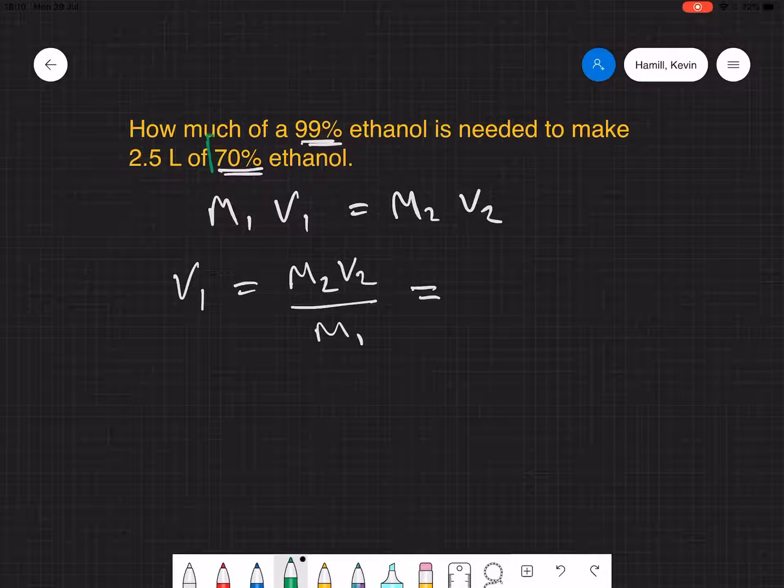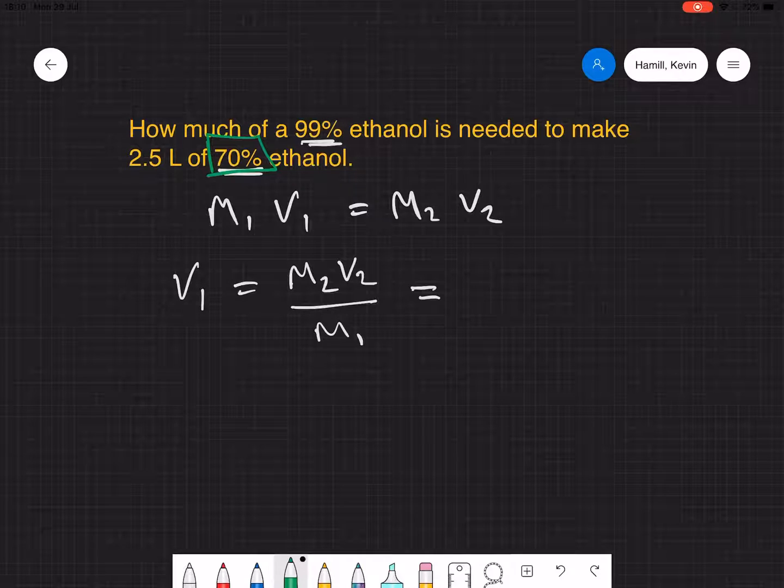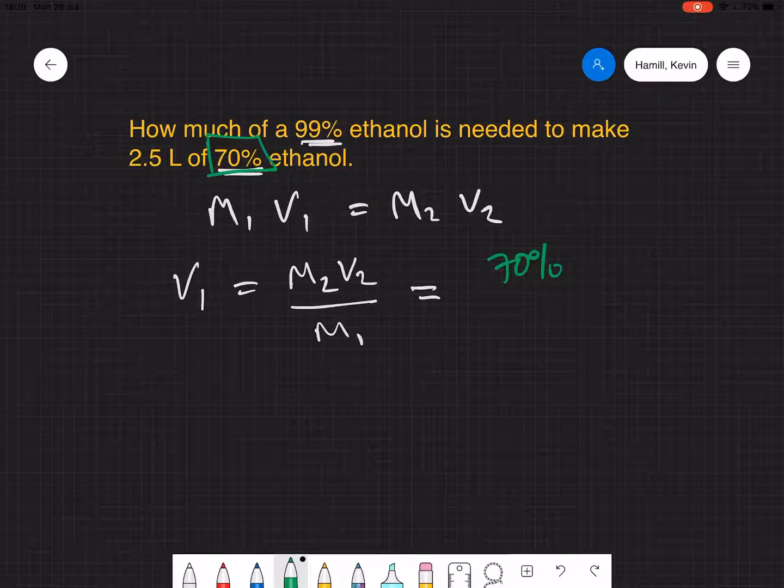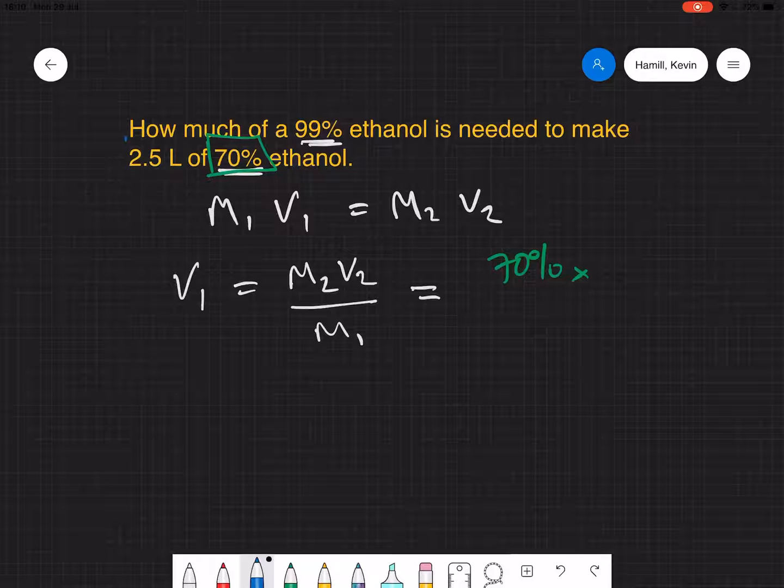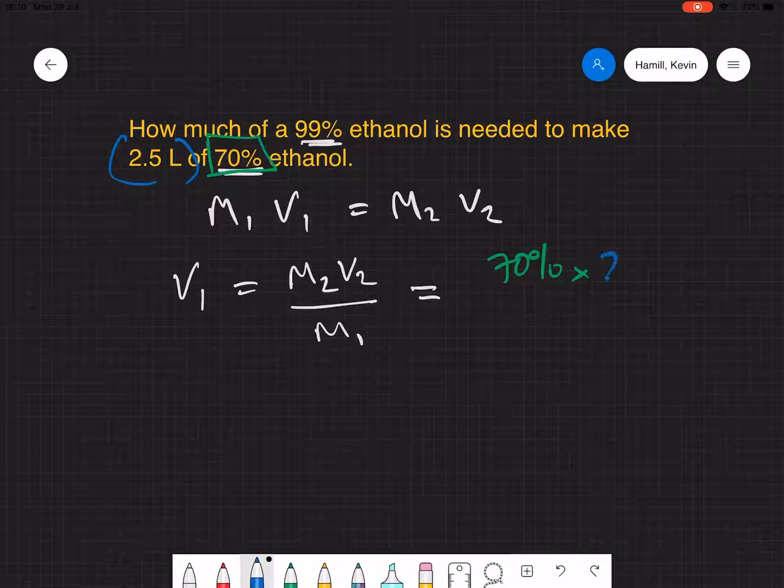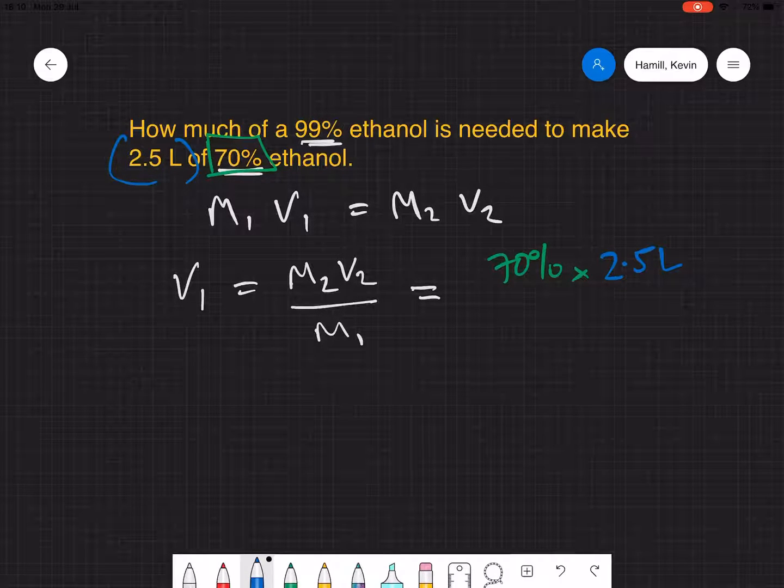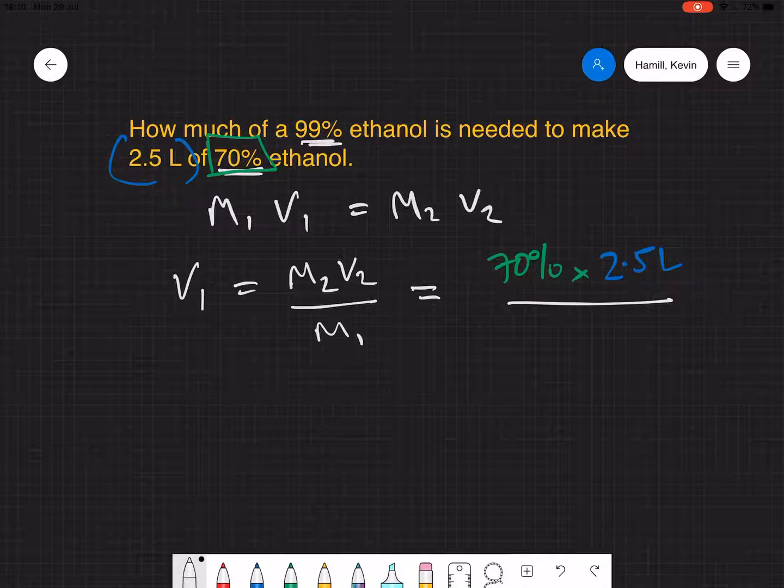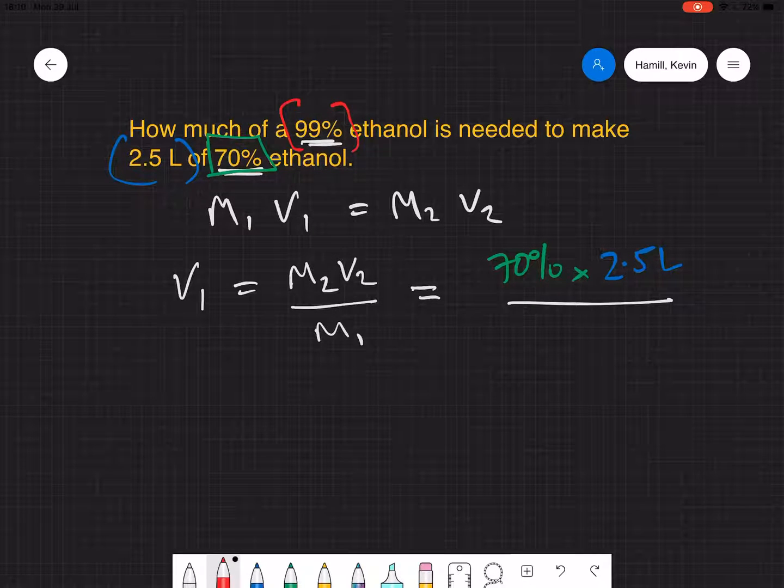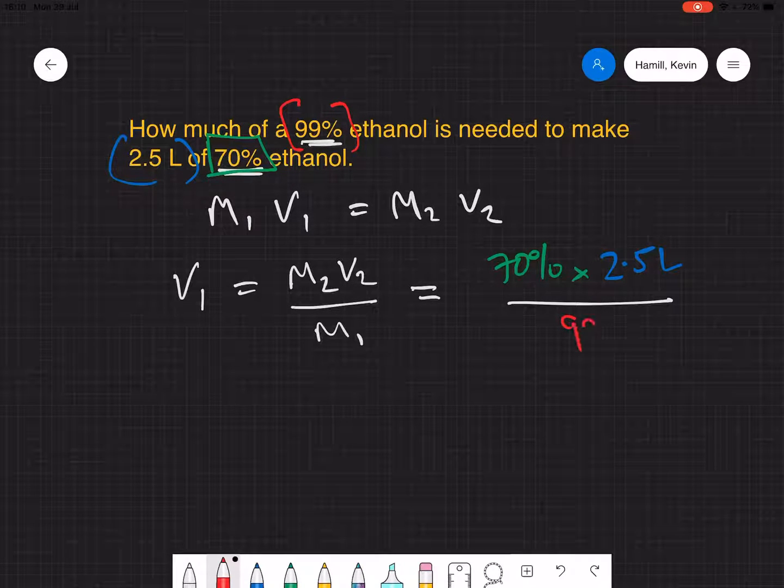We want a 70% ethanol solution, so 70%, and what we want is two and a half liters of it, 2.5 liters, and that comes from a 99% stock solution.